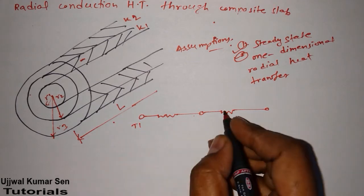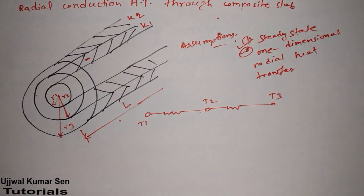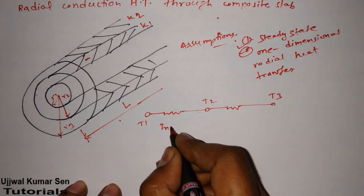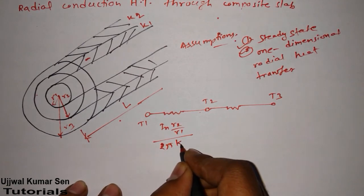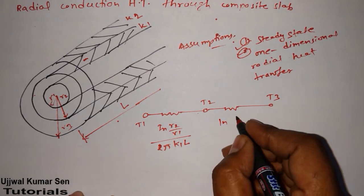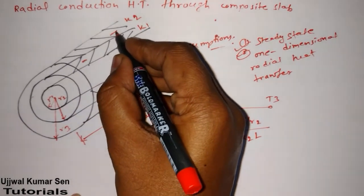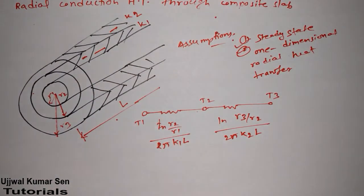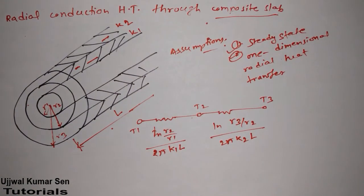Let's draw the thermal circuit. We have temperatures T1, T2, and T3, and two resistances. As you know from the hollow cylinder, the thermal resistance is ln(R2/R1) divided by 2πK1L. For the second layer the resistance is ln(R3/R2) divided by 2πK2L — K2 for the outer layer and K1 for the inner. We have two resistances because of two materials. It could be three or four layers, but at least two since this is a composite cylinder.